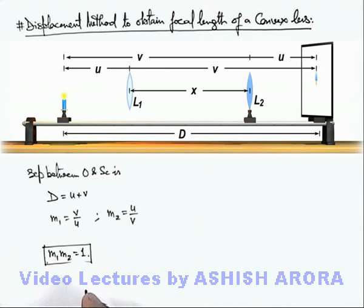And here we can see the size of image 1, which was produced when lens was in position L1. If it was Si1, this can be written as m1 multiplied by size of object.